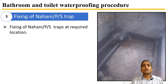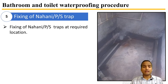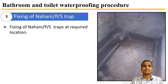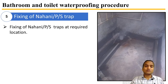After crack filling, we fix all types of traps — nahni traps, P-type traps, S-type traps, or floor traps — as these traps connect water passages to external drains. Water must pass only through these traps, not through leaks or cracks. All plumbing and electrical work must also be equally grouted and taken care of.